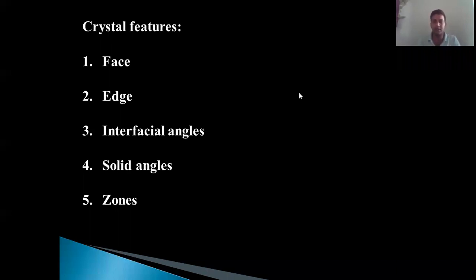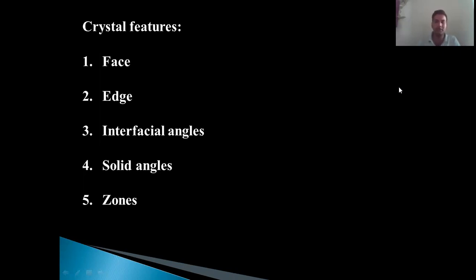A crystal will contain a face, and of course it will have an edge and interfacial angles, a set of solid angles, and not necessarily but a few crystals may have zones too. We are going to discuss how these features can be seen or identified.